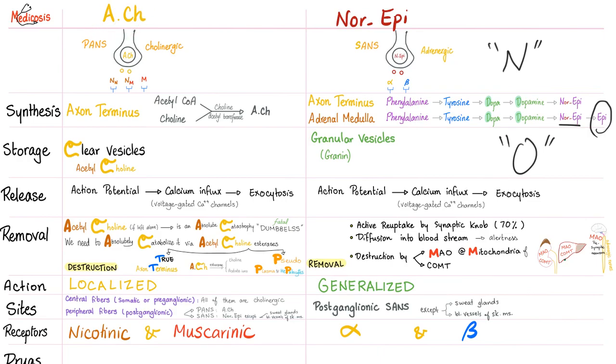The action of acetylcholine is localized because we destroyed it and didn't allow it to leak into the bloodstream. However, norepinephrine is allowed to leak, so it has a generalized effect. Where do you see acetylcholine? Central fibers, whether somatic or preganglionic. And peripheral fibers when they are postganglionic parasympathetic, or with the exception - sympathetic to sweat glands. Other than that, sympathetic will secrete norepinephrine.